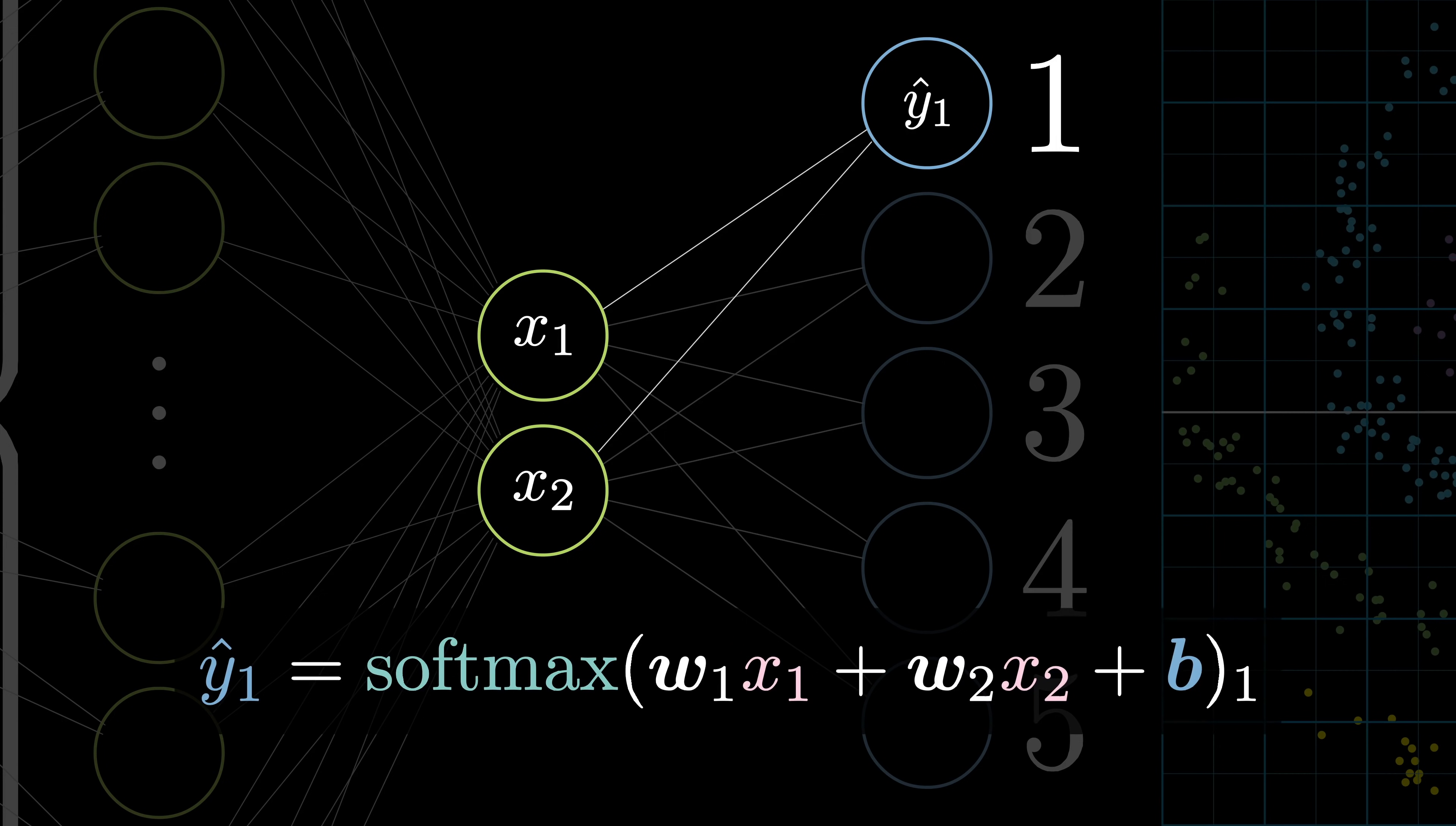Here, w1 is the first column of the weight matrix, w2 is the second column of the weight matrix, x1 and x2 are the first and second neurons of the second last layer of the neural network, and the subscript 1 refers to the first index of the softmax vector. But for now, let's just consider the equation without softmax.